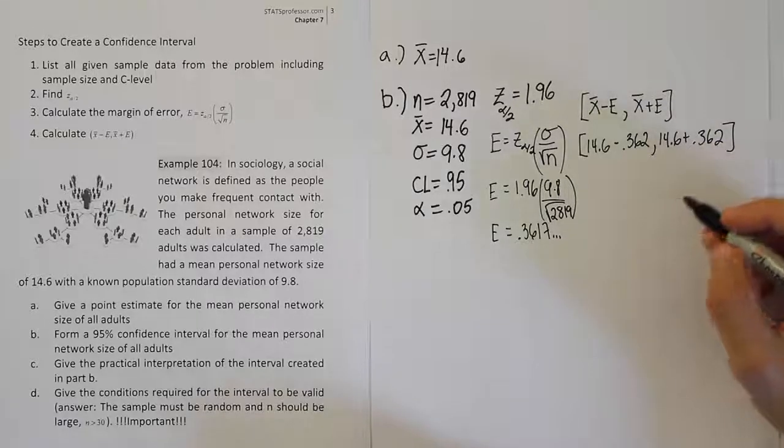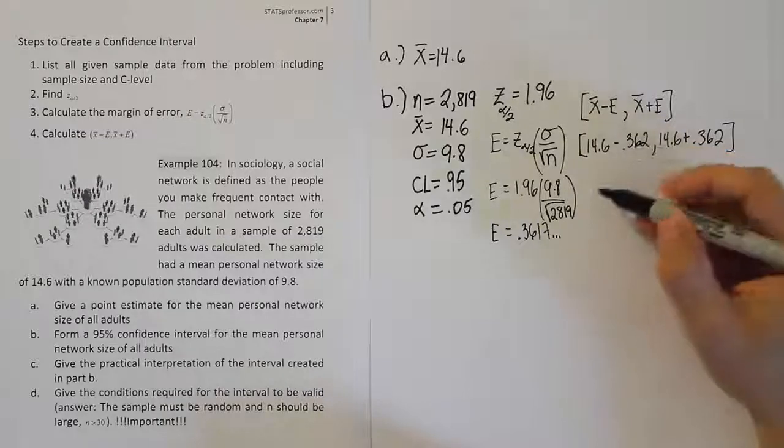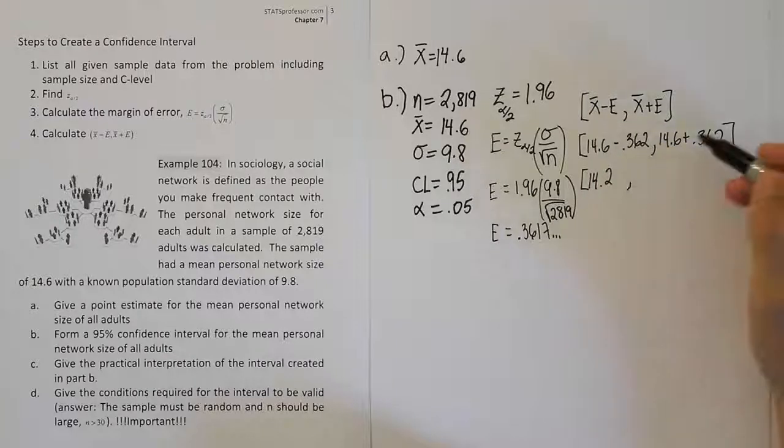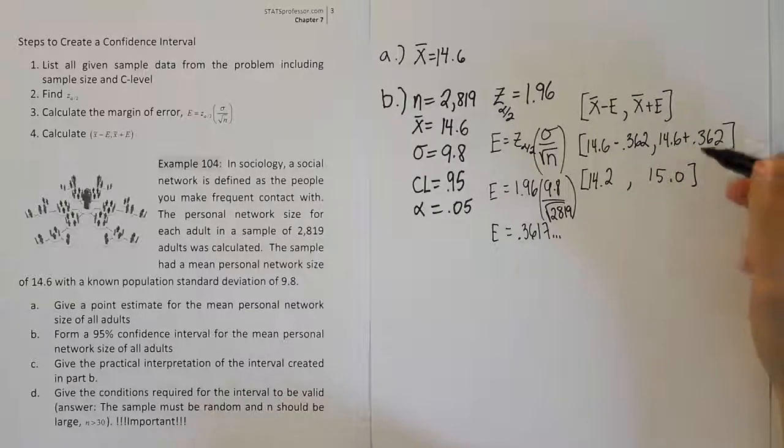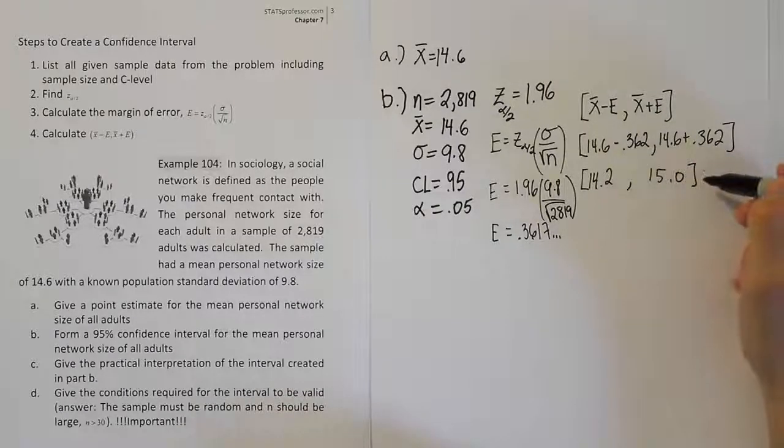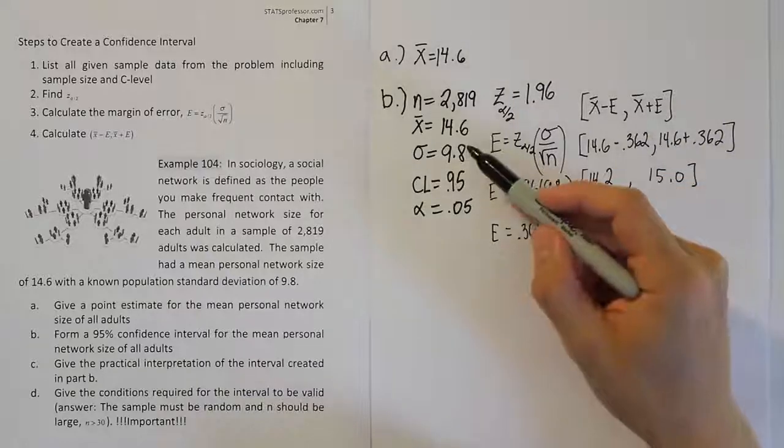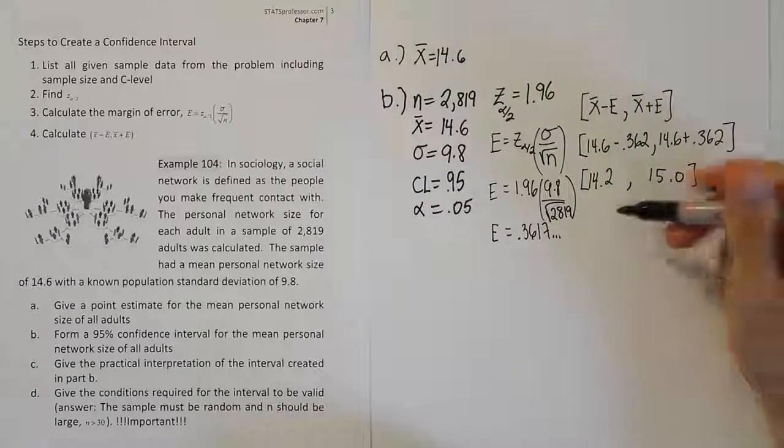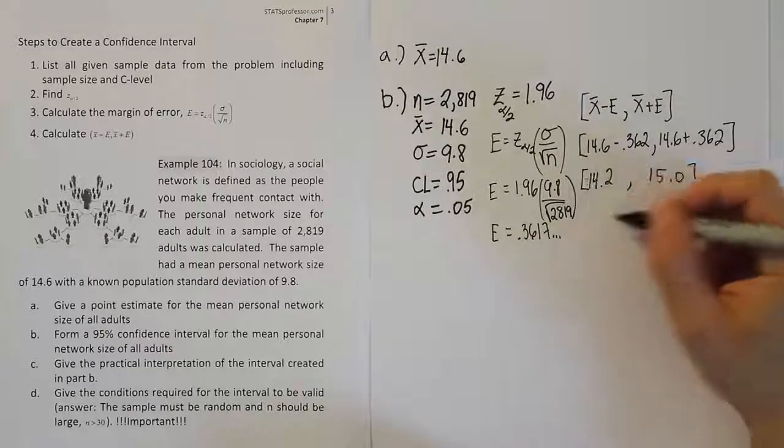If this is 14.6 minus about 0.4, this will work out to be approximately 14.2. And then 14.6 plus 0.4 will give you 15.0. Some professors pay particular attention to round-off rules. Some people will say you want to round to the same place as the sample mean. Others say you want to give the answer to one place greater than the sample mean was given to. I assume that rounding is something you're comfortable with, so I'll go ahead and leave it as it is.